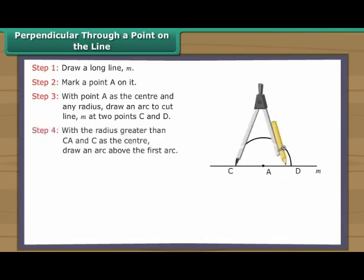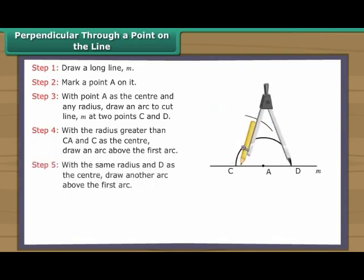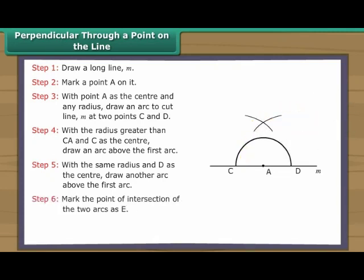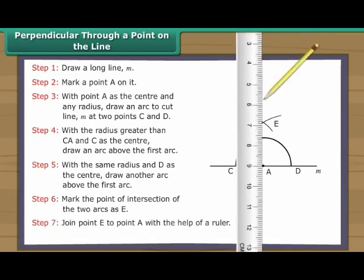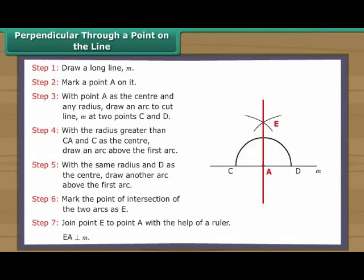With a radius greater than CA and C as the centre, draw an arc above the first arc. With the same radius and D as the centre, draw another arc above the first arc. Mark the point of intersection of the two arcs as E. Join point E to point A with the help of a ruler. EA is perpendicular to line M.